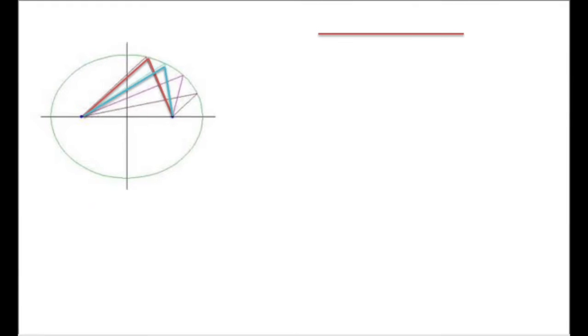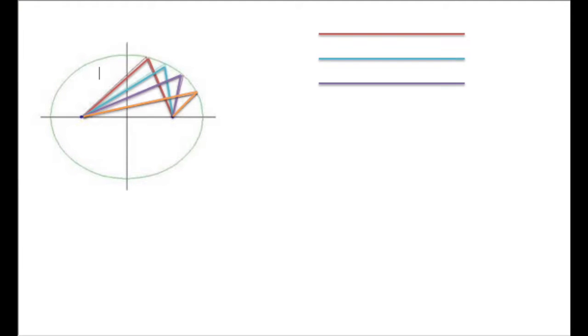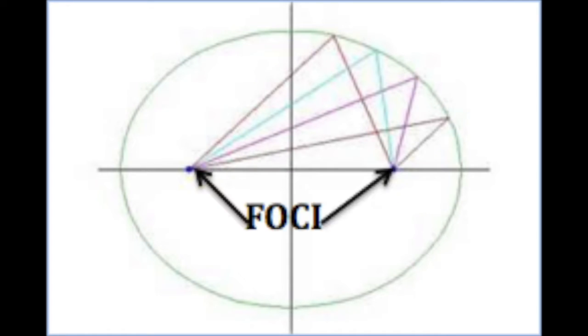Ellipses are defined by the set of all points such that the sum of the distances from two fixed points is constant. These two fixed points are called the foci.